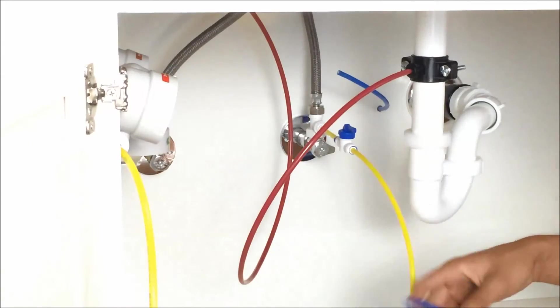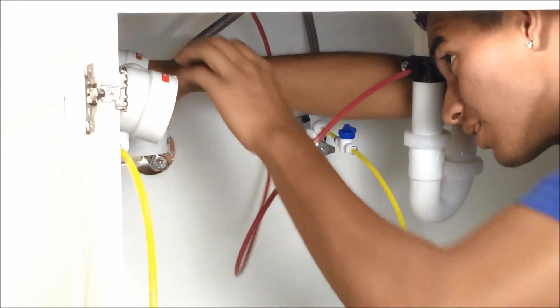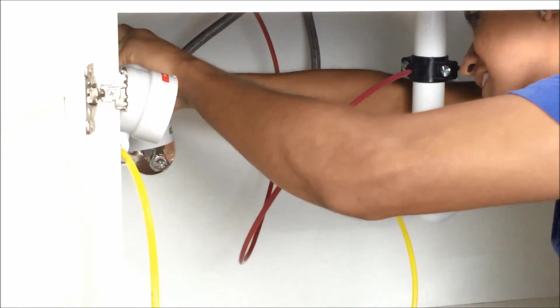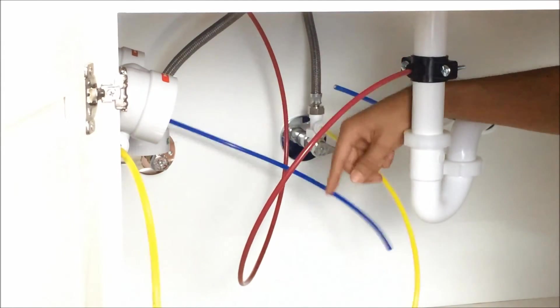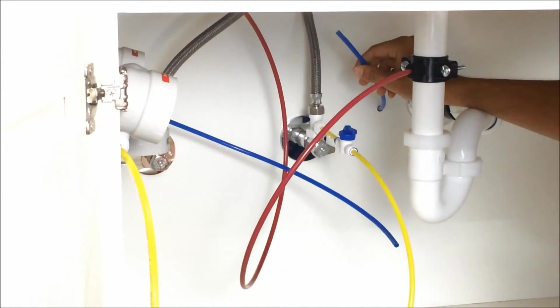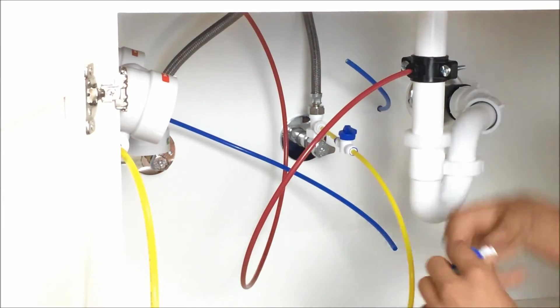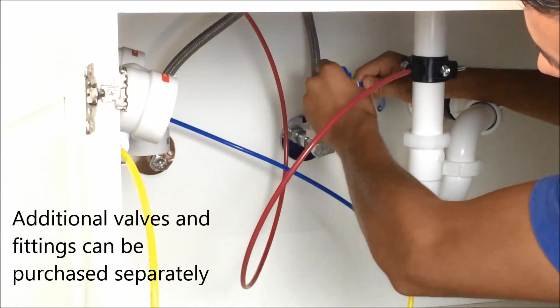And now we'll hook up the tubing to our filtered water. So this blue line here goes to a collection tank in another location. I'm just going to add this on-off valve to connect the two blue lines.